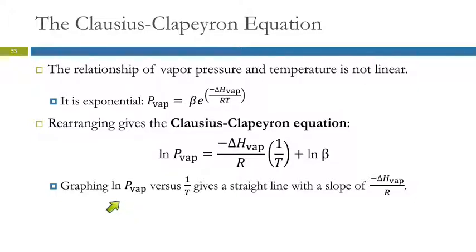So now we can graph natural log versus 1 over T, and that will give us a straight line. So this is Y, Y equals, here's the slope, that's M. This term is X, and then this is the intercept. So Y equals MX plus B is a line.